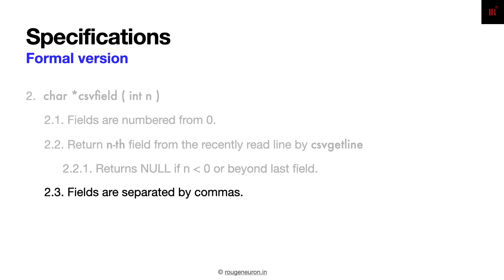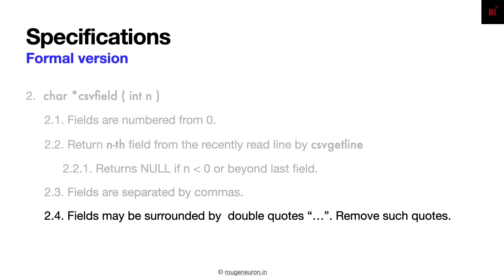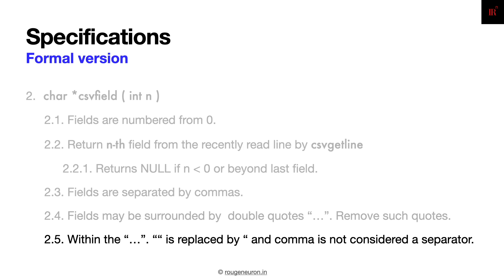To reiterate, fields are separated by commas and that's how splitting of the data is done using comma as a separator. As discussed earlier, fields may be surrounded by double quotes, so the rules around double quote parsing need to be applied and such double quotes need to be removed. If double quotes are intended and represented in the manner mentioned earlier, they have to be replaced by a single double quote. And if a comma is present within an enclosure of double quotes, it is part of the string and shouldn't be considered a separator.